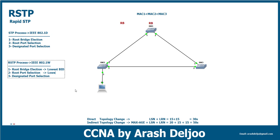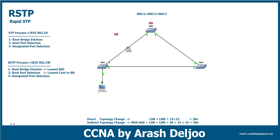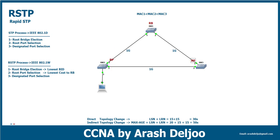After that, we select root ports in each switch — again according to the lowest cost to the root bridge, the same step as STP. Assuming all links are 1 Gigabit per second, the cost of 1G is 4. Port 1 of switch 2 is the root port of switch 2, and port 1 of switch 3 is the root port of switch 3.